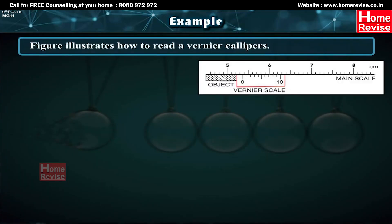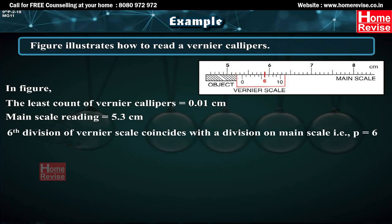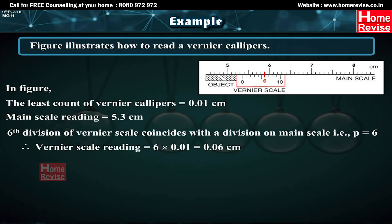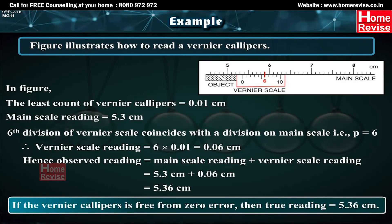Example: For a Vernier calipers with least count 0.01 cm, main scale reading = 5.3 cm, and the 6th Vernier division coincides with a main scale division (P = 6). Vernier scale reading = 6 × 0.01 = 0.06 cm. Observed reading = 5.3 + 0.06 = 5.36 cm. If the Vernier calipers is free from zero error, the true reading is 5.36 cm.